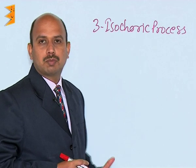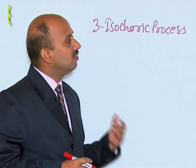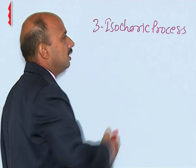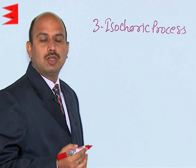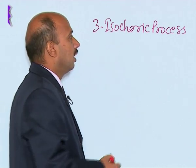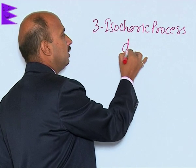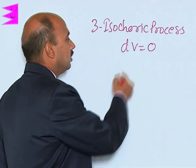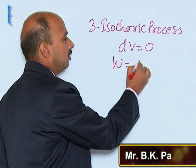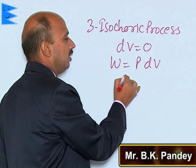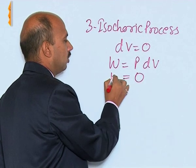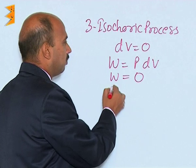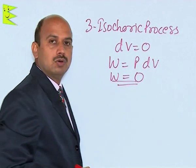The third process is the isochoric process. In this case, volume is constant — pressure and temperature change, but volume remains constant. Since volume is constant, dV equals 0, which means work done equals P·dV = 0. So in an isochoric process, work done is equal to 0.